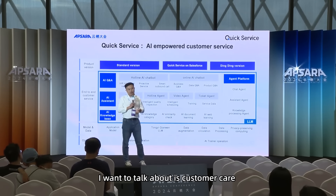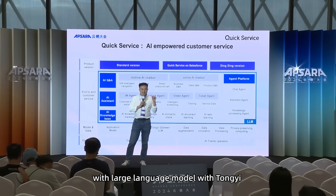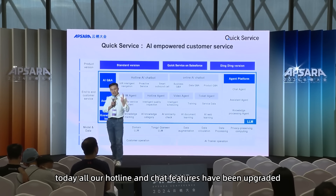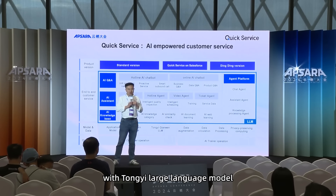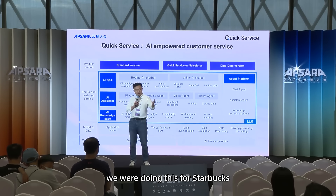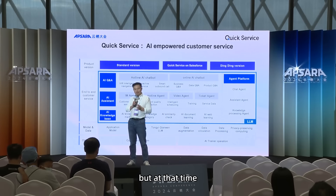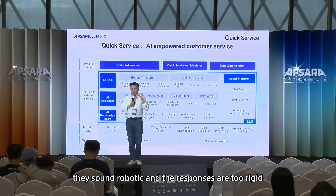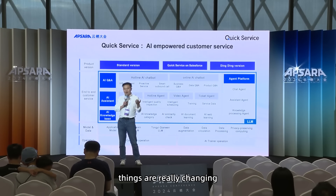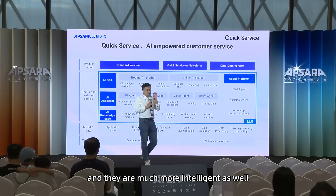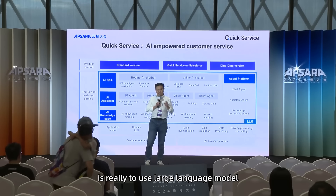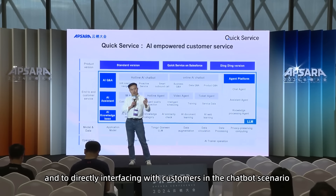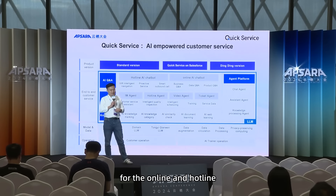The last product is customer care — Quick Service. From last year onwards, with the Tongyi large language model, we started to integrate and reform our customer care capabilities. All our hotline and chat features have been upgraded with Tongyi LLM. Chatbots are nothing new — we were doing this for Starbucks and other big brands five years ago. But at that time, chatbots were a little robotic and responses too rigid. From last year, with large language models, conversations became much more natural and intelligent. Our core direction is now to use LLM as co-pilot for customer care agents, and to directly interface with customers in online chat and hotline scenarios.